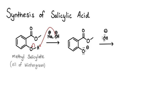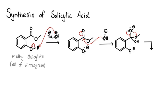Hydroxide attacks the acyl electrophilic carbon. As a result, you will get a negative charge on the top oxygen. You will get a negative charge on that oxygen. Now this is a di-anion — you have two negative charges in a single compound, so it is a di-anionic compound.